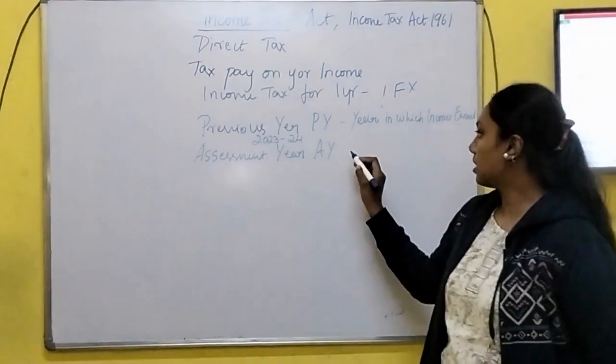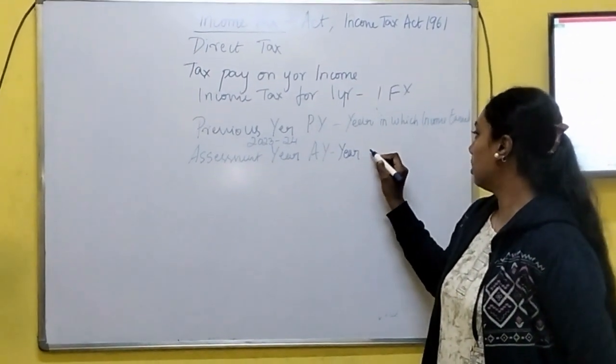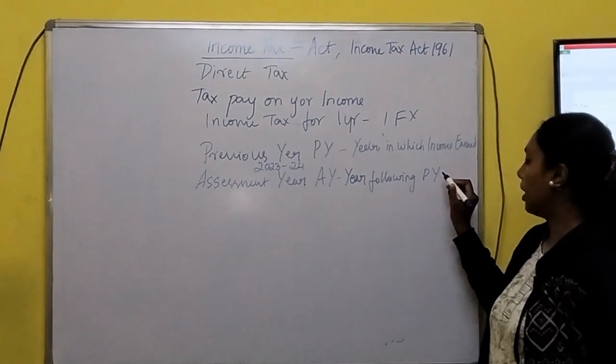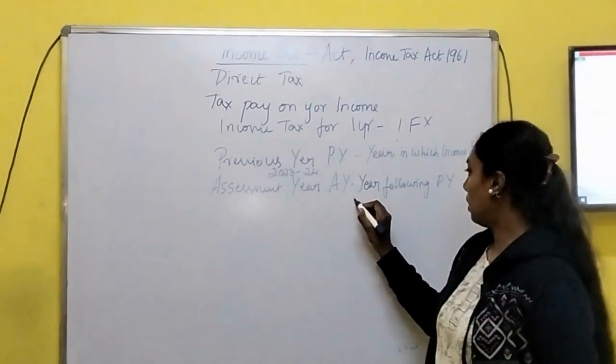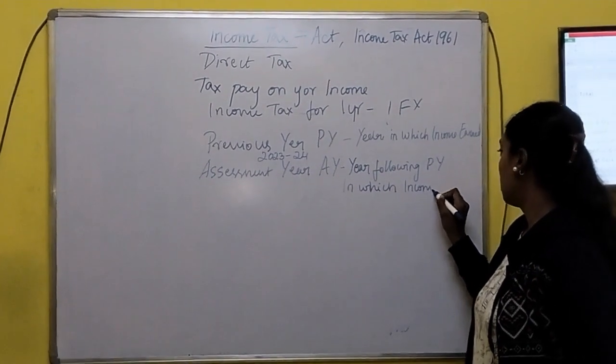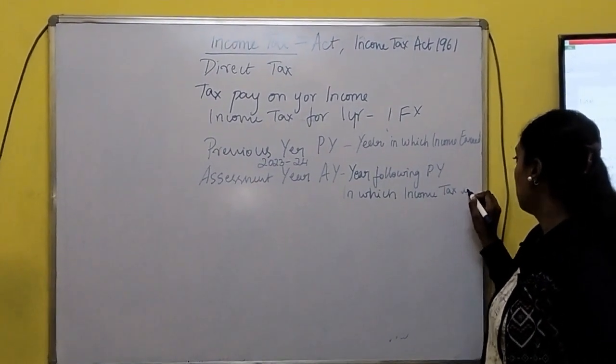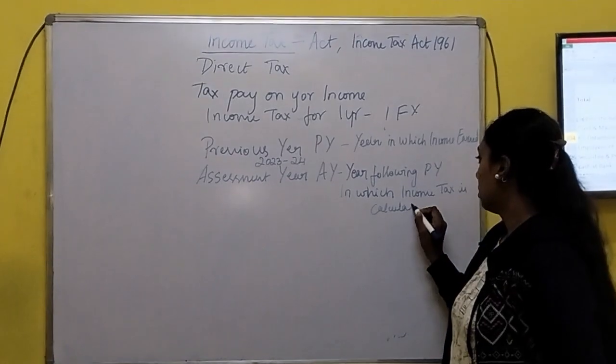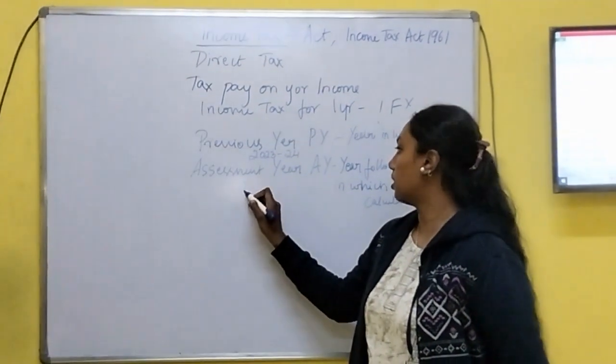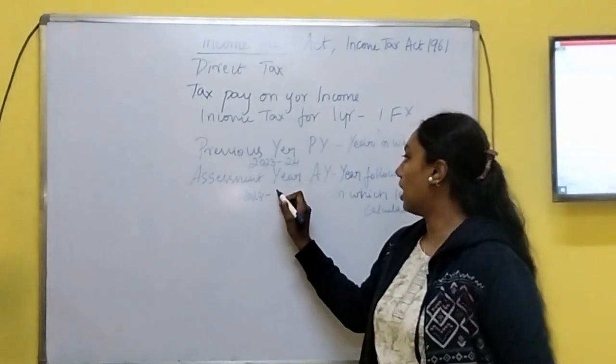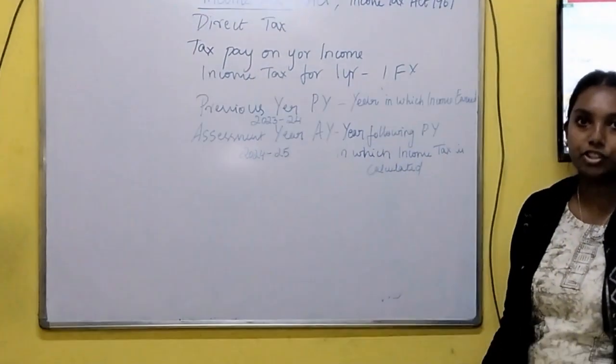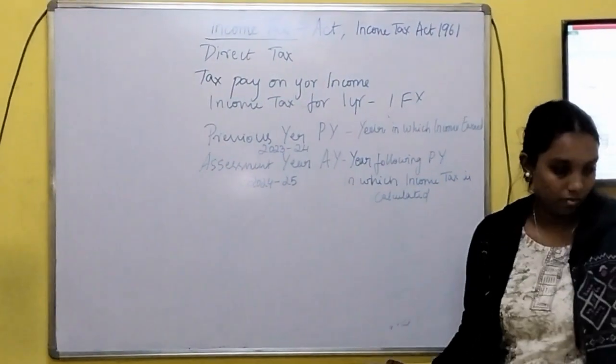Next, assessment year, which is the year following previous year, that is next year of previous year in which income tax is calculated. So if previous year is 23-24, then assessment year will be 24-25. Everything is based on the financial years.